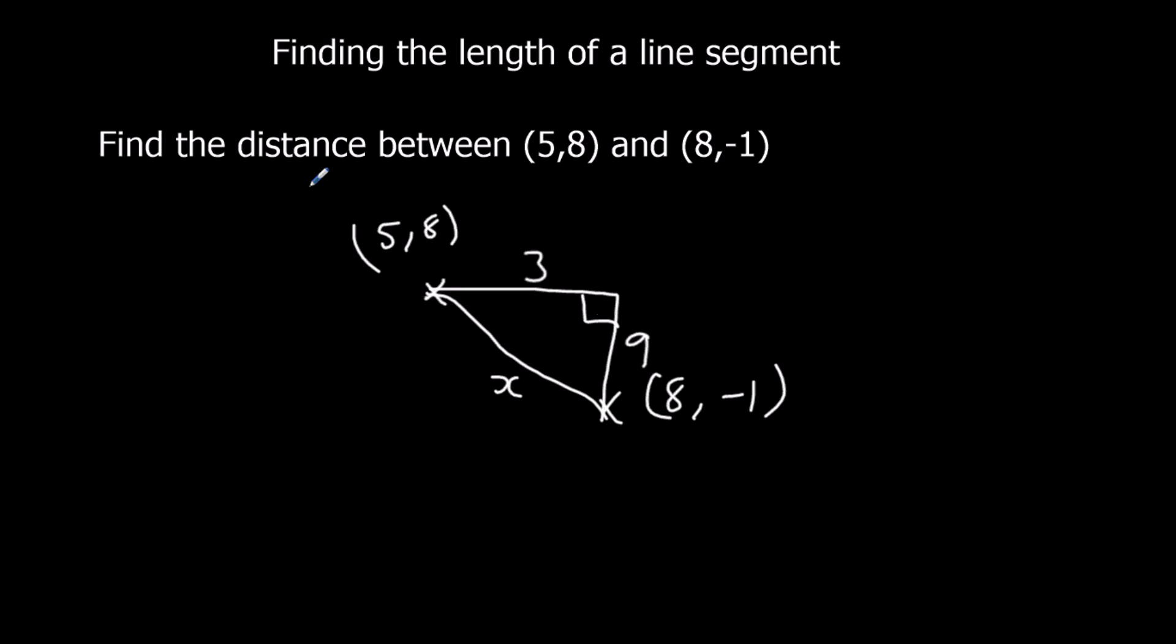And then it's just a Pythagoras question again. So a squared plus b squared equals c squared. 3 squared plus 9 squared is x squared. 9 plus 81 is x squared. So 90 is x squared. And x is the square root of 90. We'll leave it as the square root of 90 for now. This will simplify into 3 root 10, but we'll leave it. Square root 90 is fine.